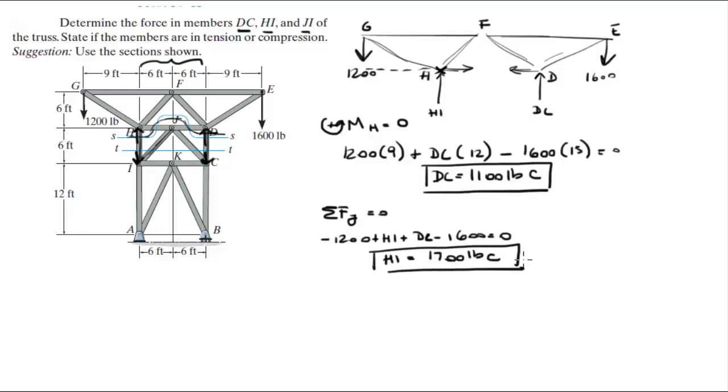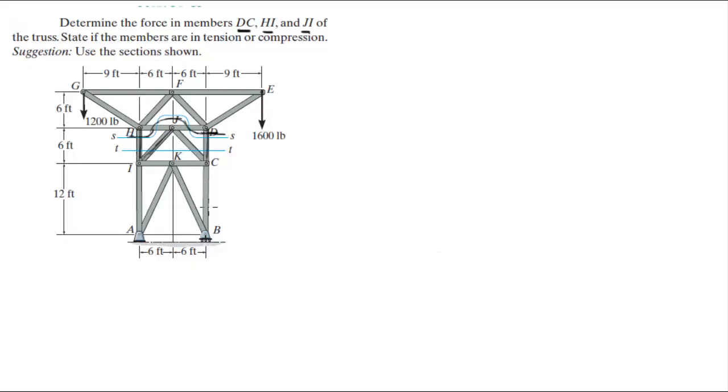We got two of the three. Now for the last one, remember we already have DC and HI. All you really have to do is cut it again, but they want you to cut it right here at D just to find this member. We're going to recut it over here, so let me redraw the diagram.